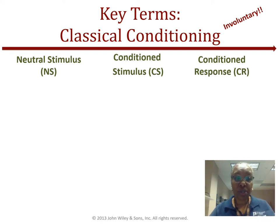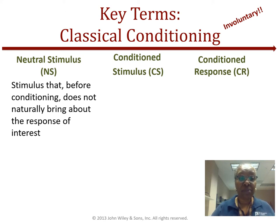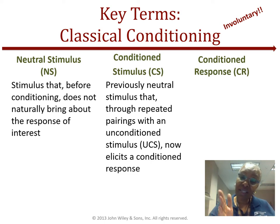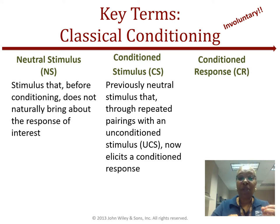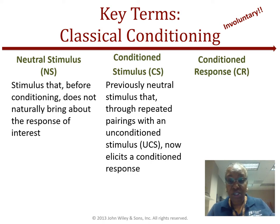The neutral stimulus is something that occurs before any type of learning or conditioning happens, and it doesn't naturally bring about the response of interest. With the conditioned stimulus — this now comes from that previous neutral stimulus. I paired the food and the bell, so the bell is now considered the conditioned stimulus. For those three months I repeatedly paired the two items together, which created that conditioned stimulus — an unconditioned stimulus now conditioned.